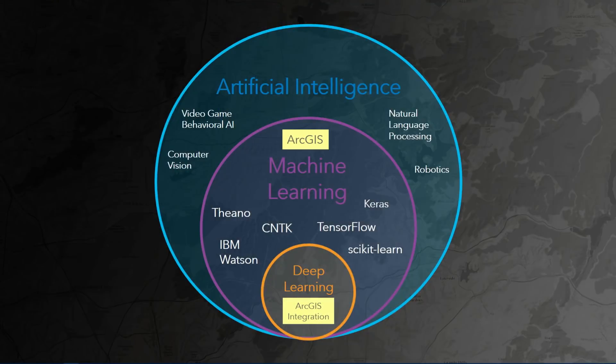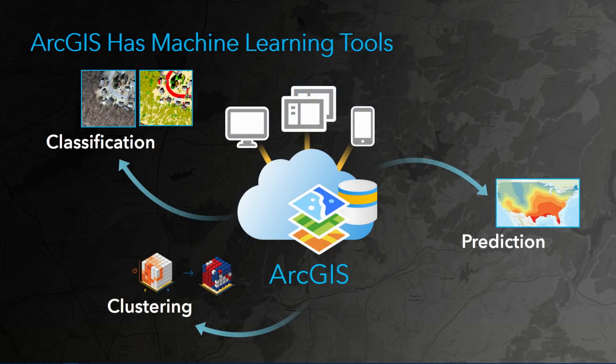But maybe you're asking yourself, what does this have to do with ArcGIS and my work in 2018? Do we have machine learning in ArcGIS today? The answer is yes. We do have machine learning tools in ArcGIS, and we can integrate with deep learning and machine learning engines as well. You can use the existing machine learning tools in ArcGIS for three main things: predictions, clustering, and classification.